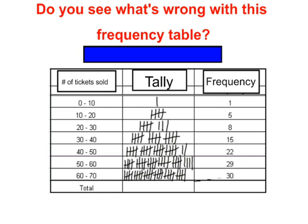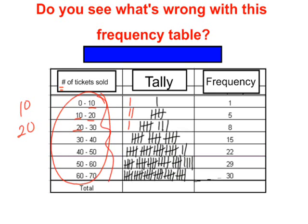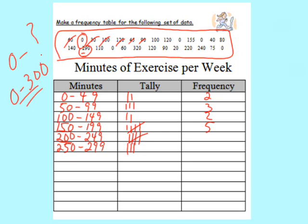Now here's a frequency table with a problem — see if you can spot it. The hint: it has to do with the intervals chosen. The problem is that some intervals overlap. What if a student sold 10 tickets — where would you put the tally mark? It could go in two different intervals. The same problem exists with 20. It's important that when you select intervals, they don't overlap. On the ones we just created, the intervals don't overlap.